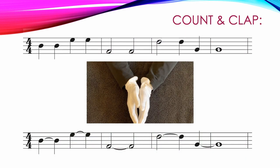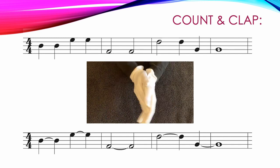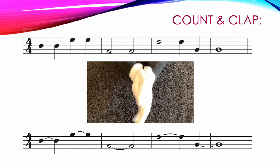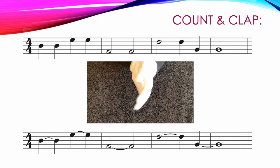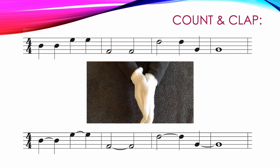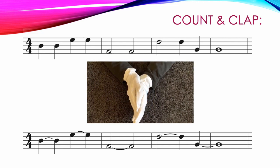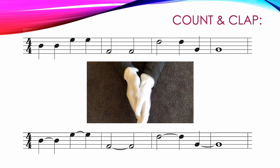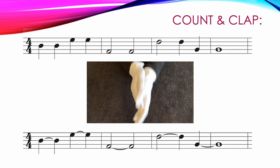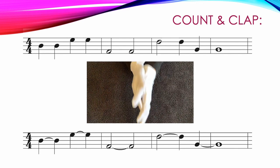Now let's take a look at the correct way to count and clap both of these examples. We'll start with the top example, which has no ties: one, two, three, four; one, two, three, four; one, two, three, four; one, two, three, four. Every single note started with a clap because none of them are tied together. Now comparing that with the bottom example with ties: one, two, three, four; one, two, three, four; one, two, three, four; one, two, three, four.